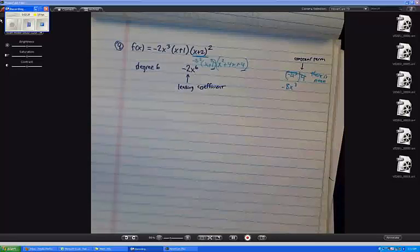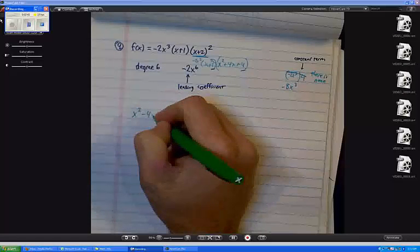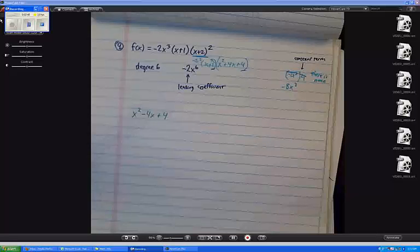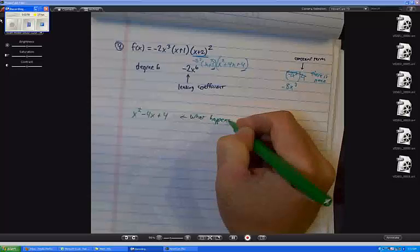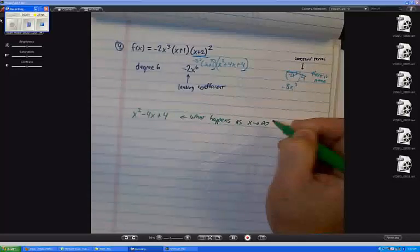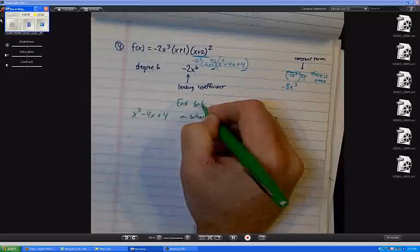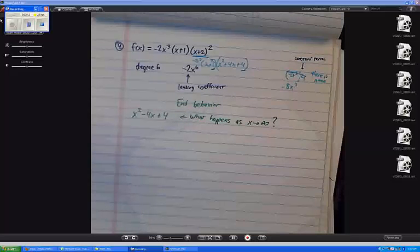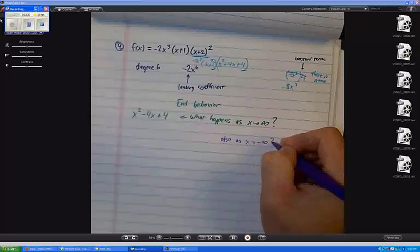And then, the end behavior. Okay. So, this is interesting. When you have a polynomial, all right? Let's start with a smaller example. Let's take x squared minus 4x plus 4. When we talk about end behavior, we're actually getting into a calculus idea. We're saying, what happens as x goes to infinity? That's the question I'm asking when I say end behavior. I'm also asking, also, as x goes to negative infinity.